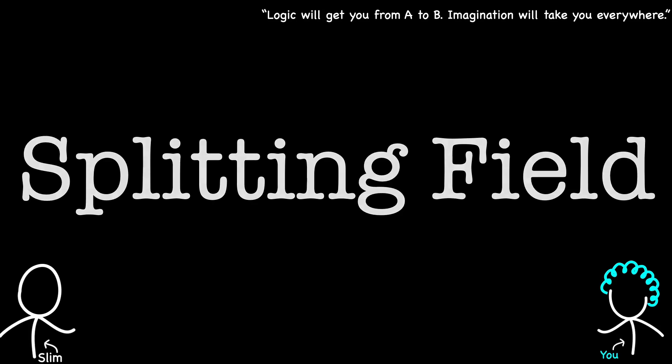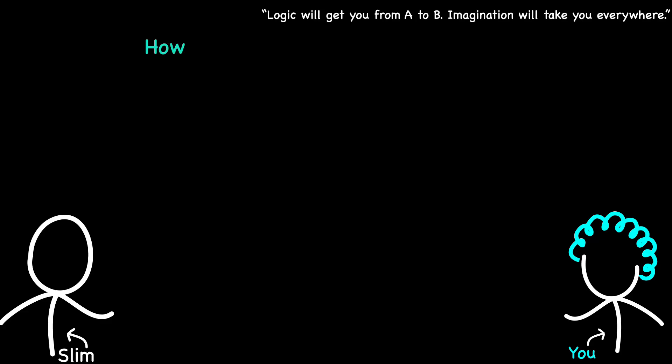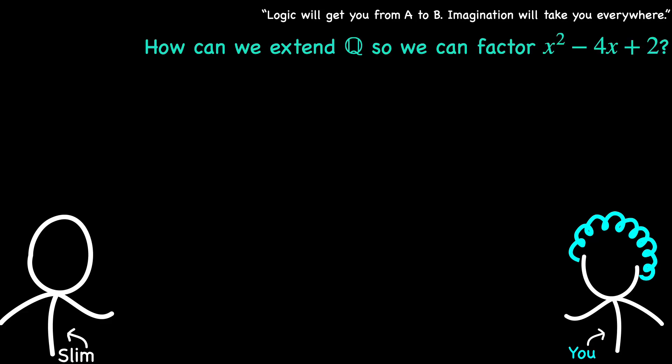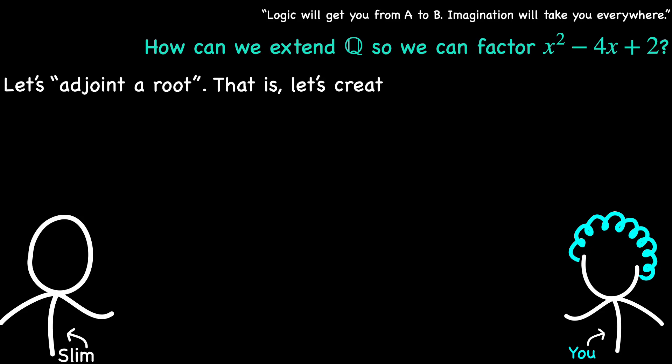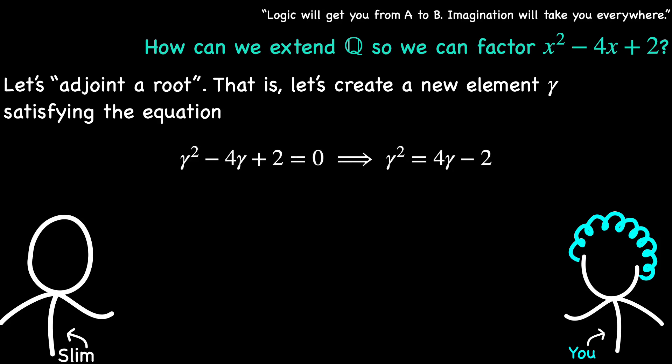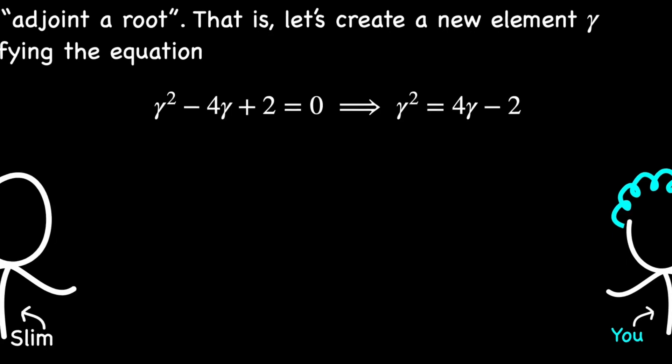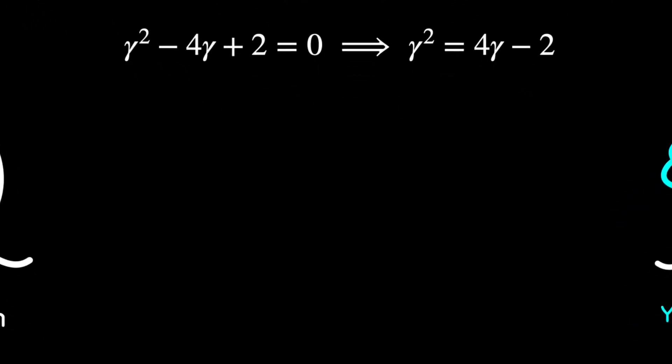So we know we need to extend the rational numbers to find the missing solutions to x squared minus 4x plus 2. The key idea is what mathematicians call adjoining a root — we essentially invent a new number that satisfies our equation. Let's call this new number gamma. We are going to force gamma to be a solution to x squared minus 4x plus 2 equals 0, which means that gamma squared minus 4 gamma plus 2 equals 0. We can rearrange this to get gamma squared equals 4 gamma minus 2.